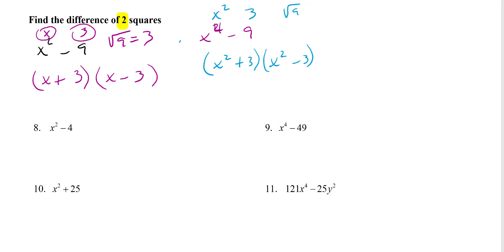So notice, if it's just x squared, you have x, so here's x and x. If it's x to the 4th, you have x squared, so it's x squared and x squared. So if there's a square term, you're writing just x and x. If it's x to the 4th, you're writing x squared and x squared.